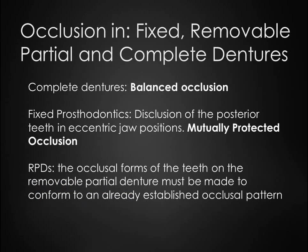Ideal occlusal relationships for complete dentures are achieved through balanced occlusion. This is the simultaneous contacting of the upper and lower teeth on the right and left side during lateral excursions and simultaneously in the anterior and posterior occlusal areas during protrusion. This scheme was developed to prevent a tipping or rotating of the denture bases in the mouth during function. For fixed prosthodontics, ideal occlusion is mutually protected occlusion. And for removable partial dentures, the occlusal forms of the teeth on the removable partial denture must be made to conform to an already established occlusal pattern.